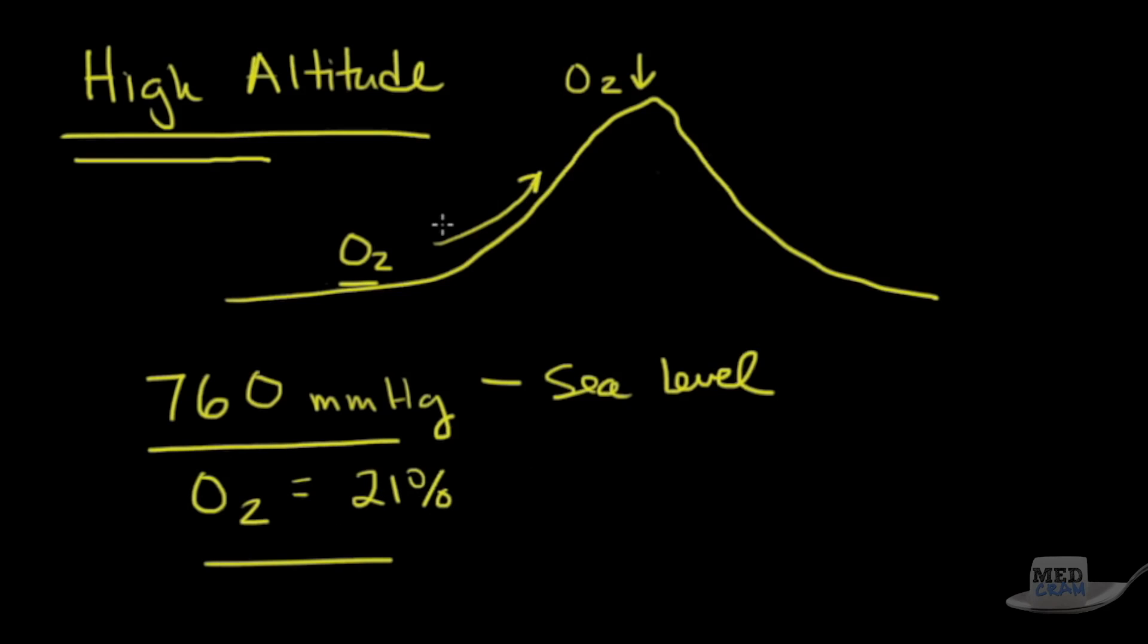So what happens as you go up in altitude? Does the fractional or partial pressure of oxygen go down? No, it doesn't. What actually happens is the total barometric pressure goes down, and as a result, the 21% of that pressure becomes smaller.